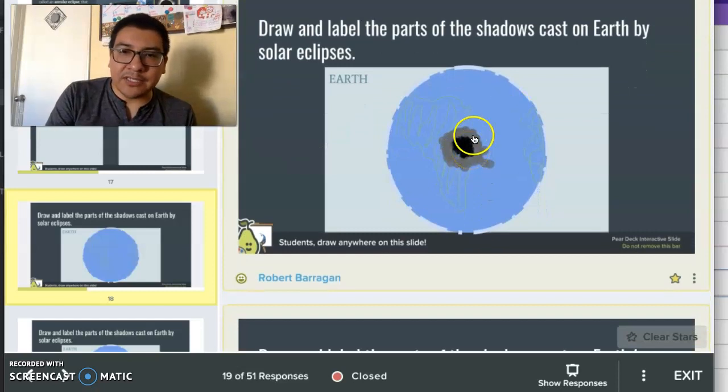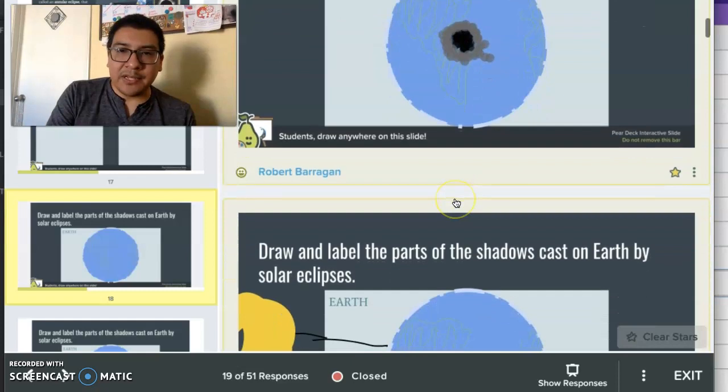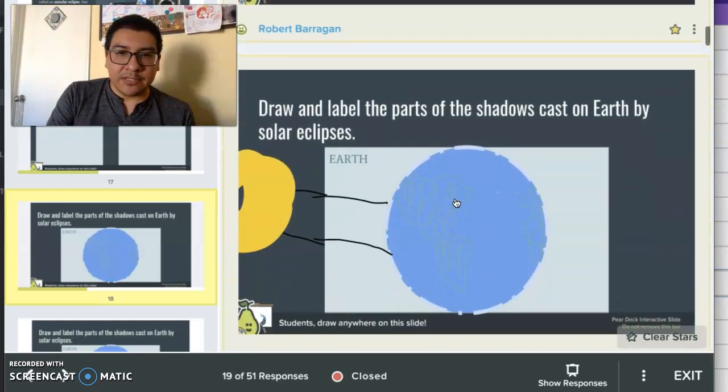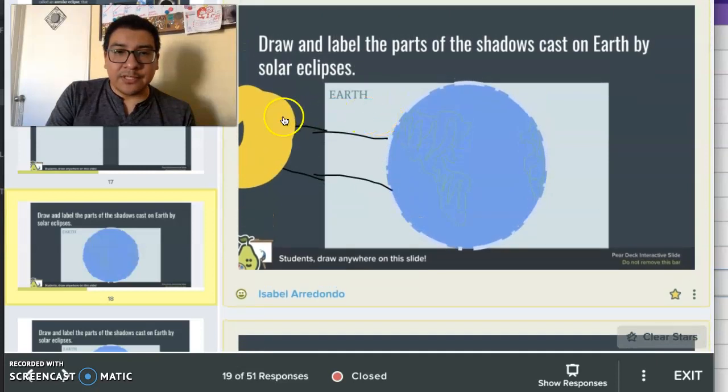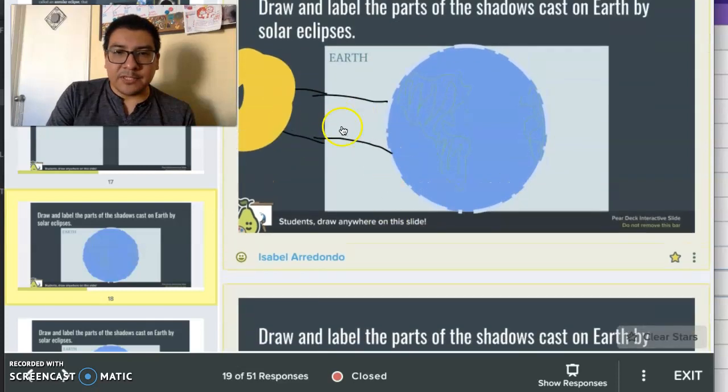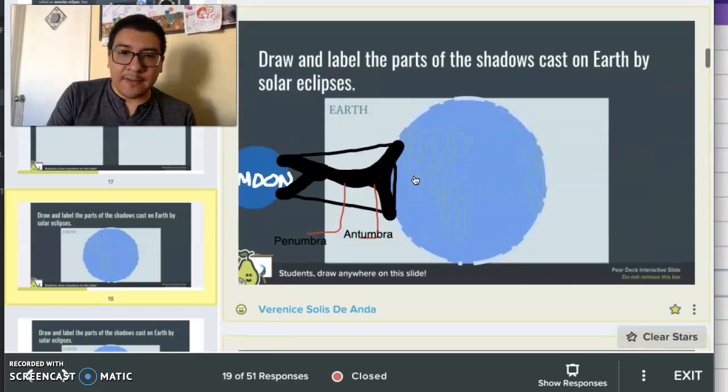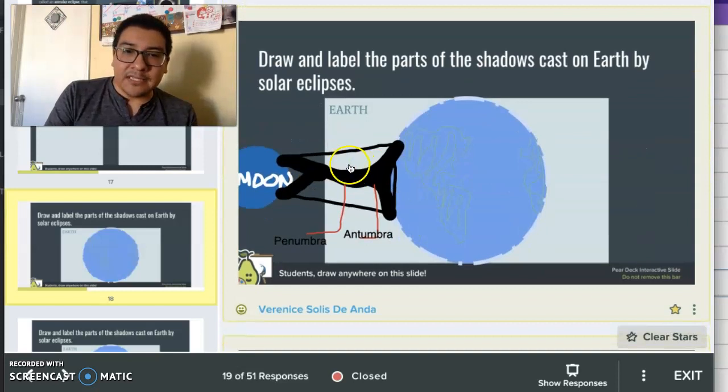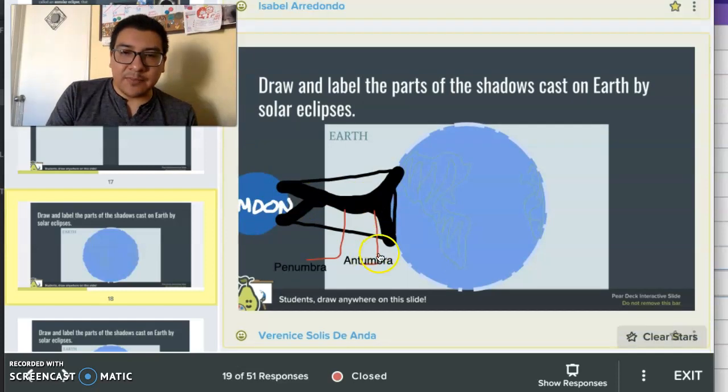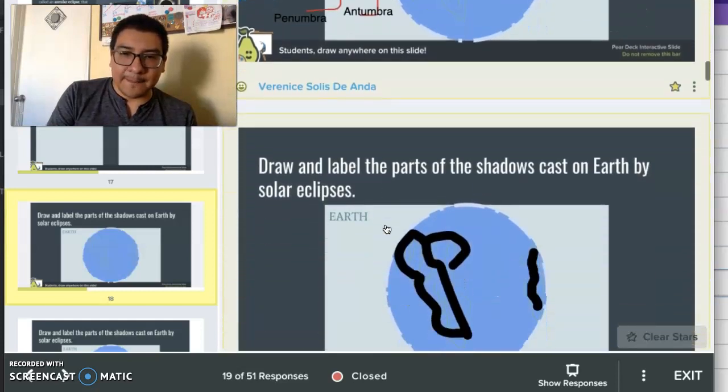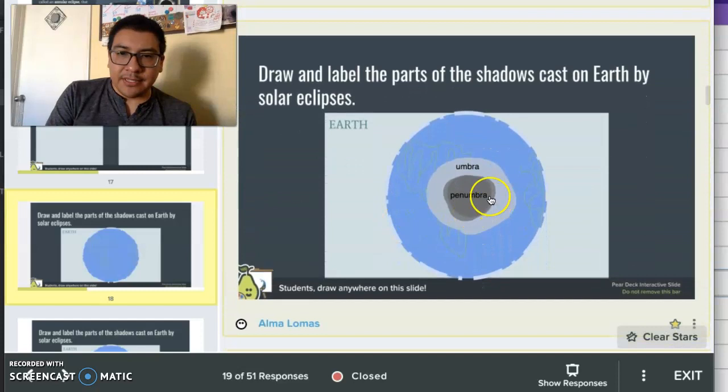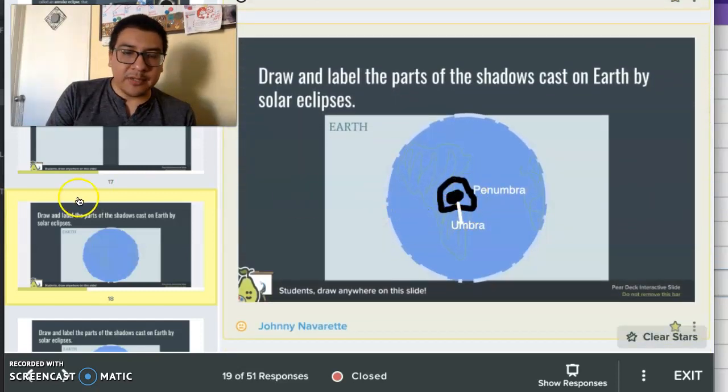This one here, one of the students forgot to label which part is the umbra and penumbra, but the shadow looks good. Here someone drew the sun and the light coming onto the Earth, but we're missing the moon and labeling the shadows. And this last one here, one of the students drew the moon and the shadow parts. And in this one, they put in the antumbra, which would be the shadow that would be cast by the annular eclipse. Umbra and penumbra, umbra and penumbra. Good.